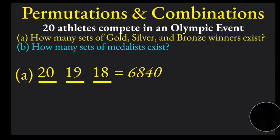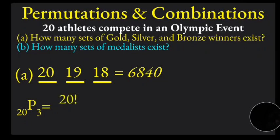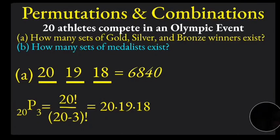You may have seen in your math class a notation or formula for permutations of three items taken from a population of 20, which is exactly what we're doing here. From your textbook, the formula is 20 factorial divided by (20 minus 3) factorial, which is 17 factorial. The 20 factorial in the numerator is 20 times 19 times 18 times 17 factorial, which cancels what's in the denominator. Using that formula gives you the same result — it's just a way to count how many permutations you have when taking three things from a population of 20.